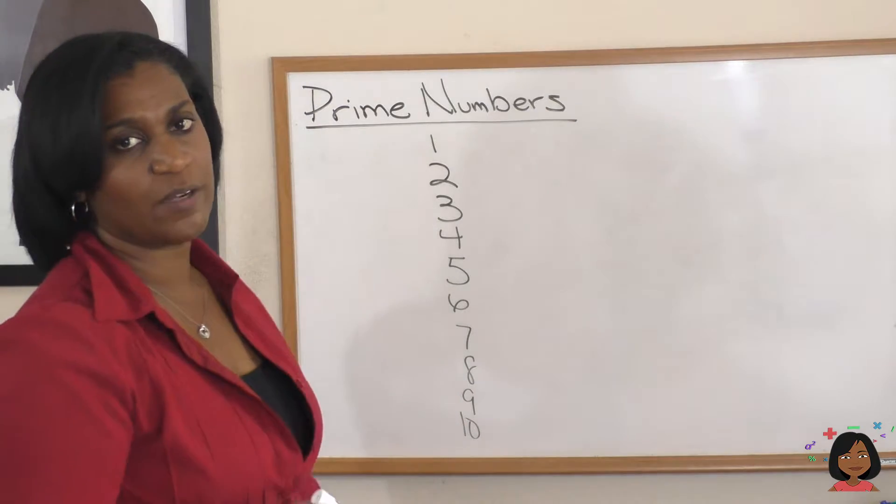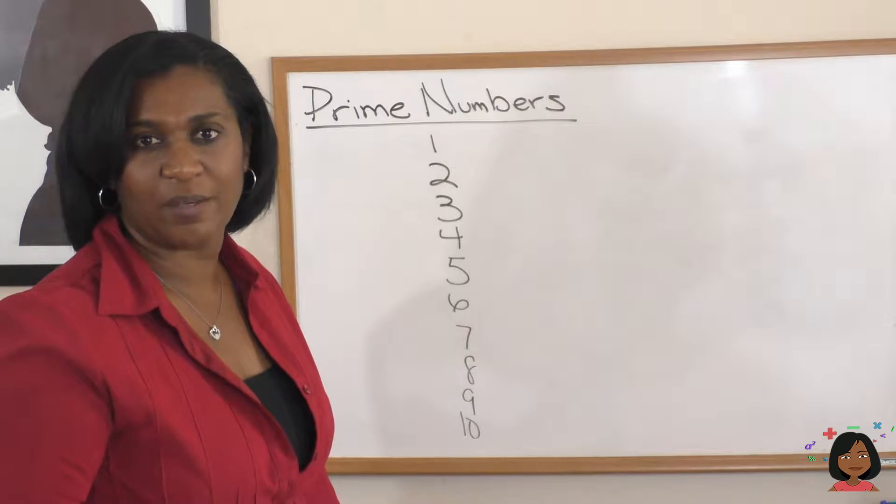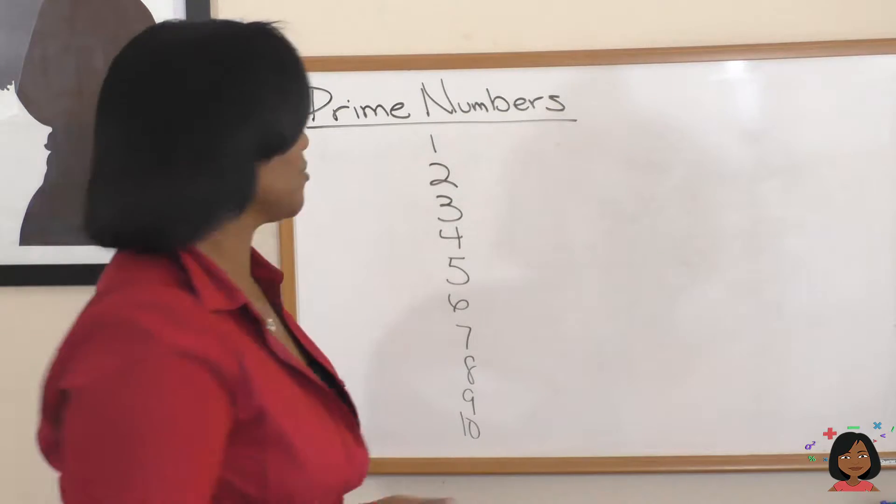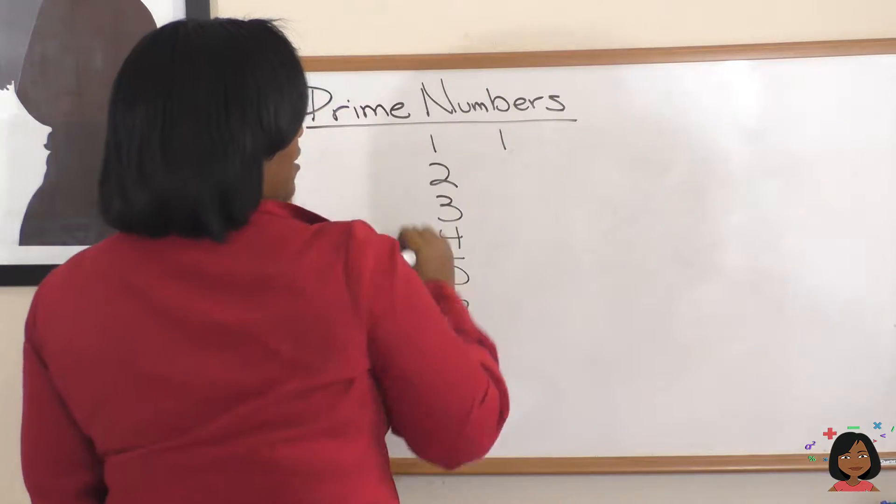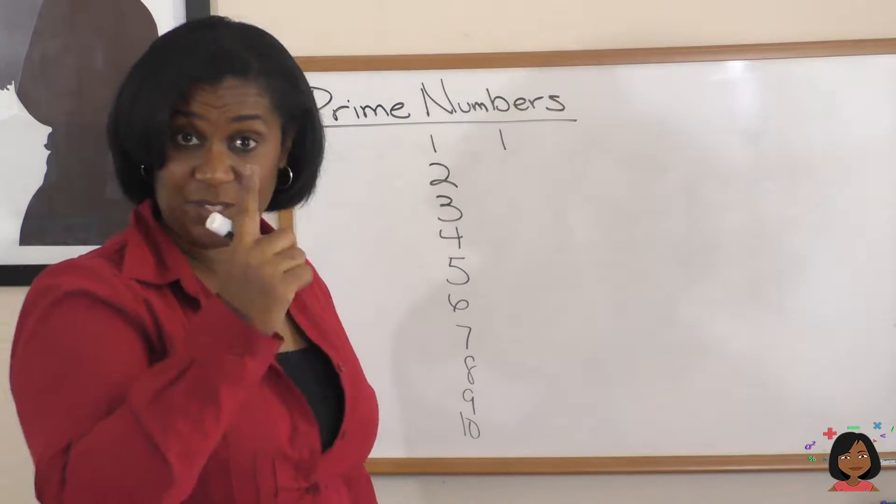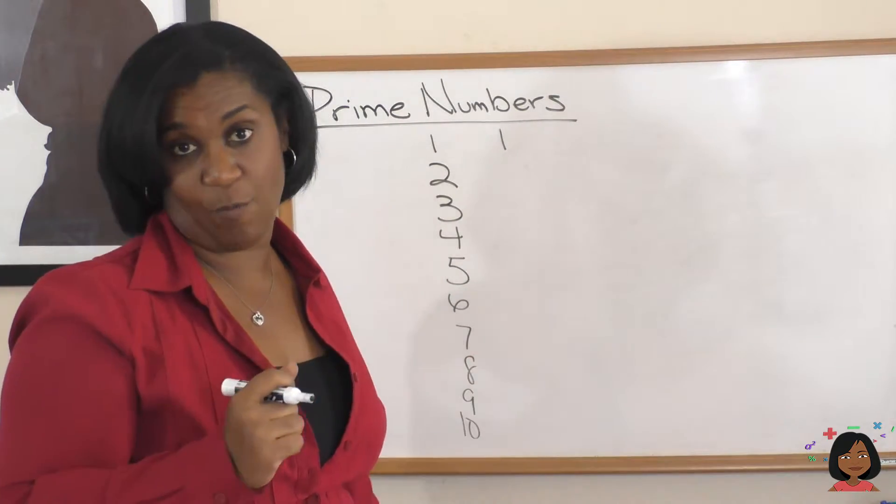Let's start with 1. 1 times 1 equals 1. So guess what? The only factor of 1 is 1. No other numbers are factors of 1.